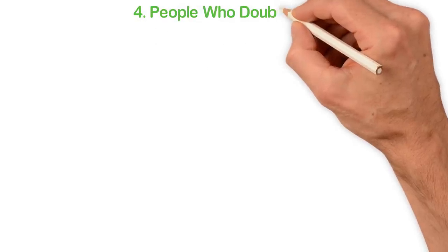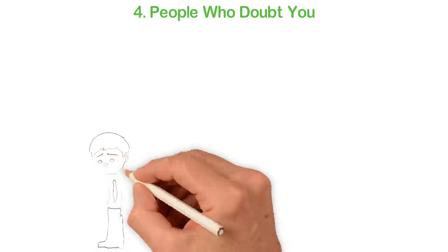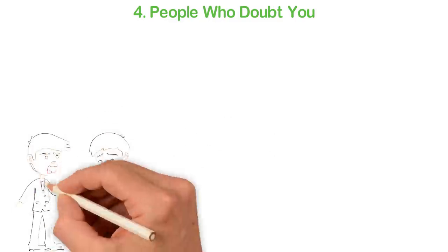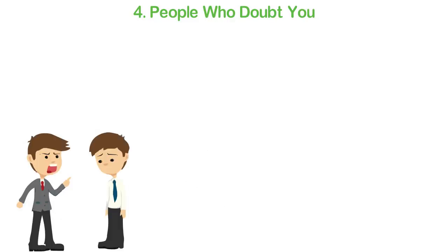4. People who doubt you. One of my brothers once told me that I will never succeed. Yeah, he didn't use that exact words but that should be the literal interpretation of what he said.